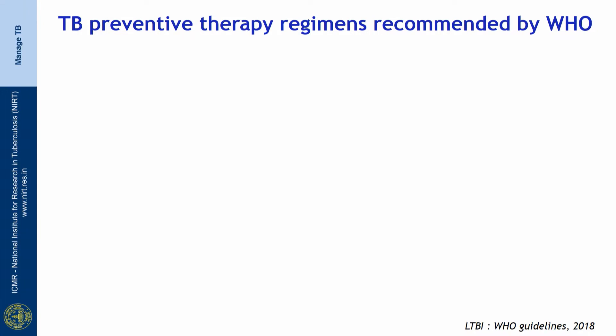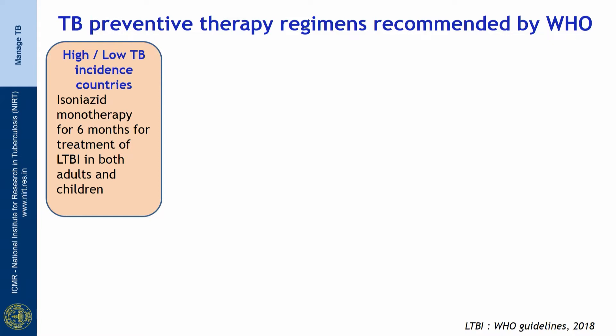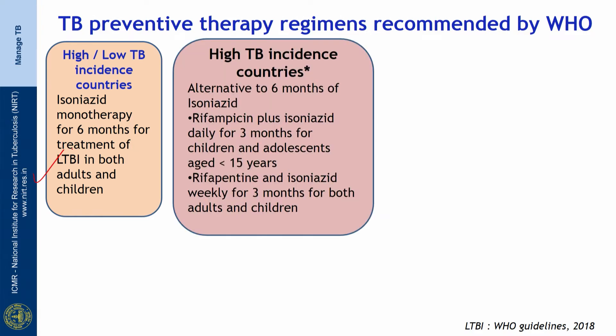What are the regimens recommended by WHO for TB preventive therapy? In both high and low TB incidence countries, WHO recommends isoniazid monotherapy for a duration of 6 months for treatment of LTBI in both adults and children. In high TB incidence countries — where estimated TB incidence is more than or equal to 100 per lakh population — alternatively, rifampicin plus isoniazid daily for 3 months is recommended for children and adolescents aged less than 15 years.